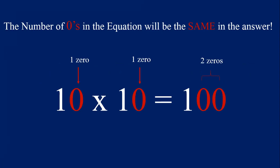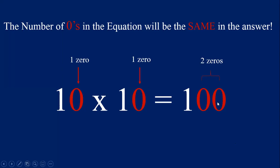For example, I have the equation 10 times 10 on the screen. If you remember, when multiplying by 10, all we have to do is take a zero from the 10 and put it behind the other factor we're multiplying by, and that will quickly give us the correct answer of 100. That strategy is probably the fastest to use when multiplying by 10, but the strategy of counting the zeros will also work.